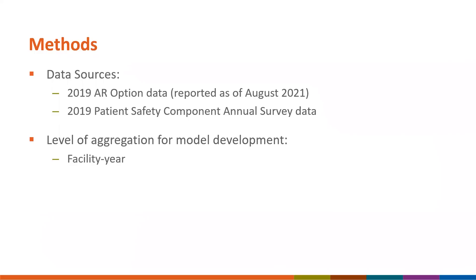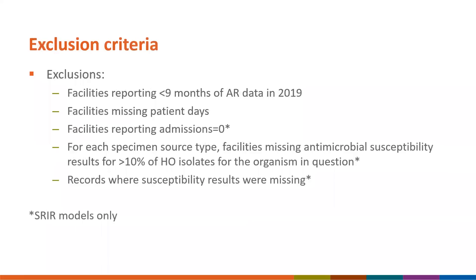The data sources for these metrics included 2019 AR option data reported to the AUR module as of August 2021, and 2019 patient safety component annual hospital survey data, which was used for facility level risk adjustment, with models built at the facility year level. Facilities were excluded from both SRIR and PSIR models if they reported fewer than nine months of AR data in 2019, or if they were missing patient days. For SRIR models, facilities were also excluded if they reported zero admissions, if they were missing antimicrobial susceptibility results for more than 10% of hospital onset isolates, and separately isolates were excluded if susceptibility results were missing.